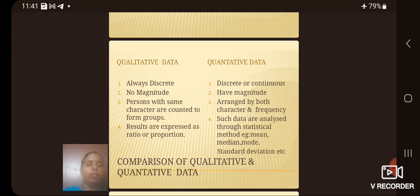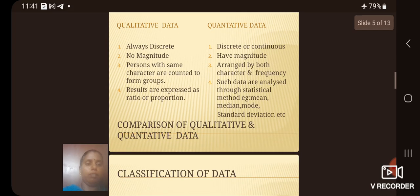In qualitative data, persons with same character are counted to form groups. In quantitative data, arranged by both character and frequency. Fourth, results are expressed as ratio or proportion. In quantitative data, it is a statistical method. For example: mean, median, mode, standard deviation, etc.